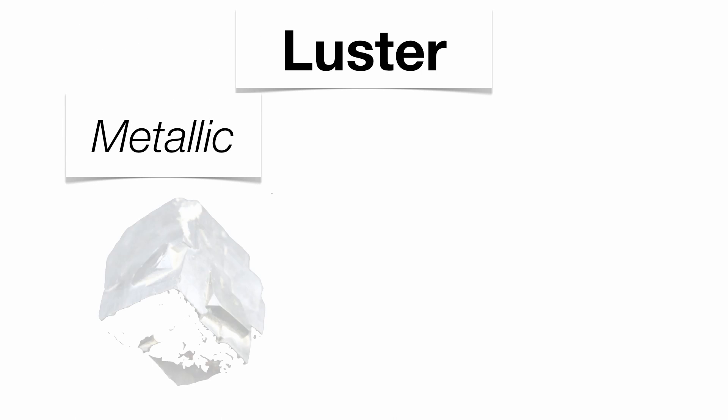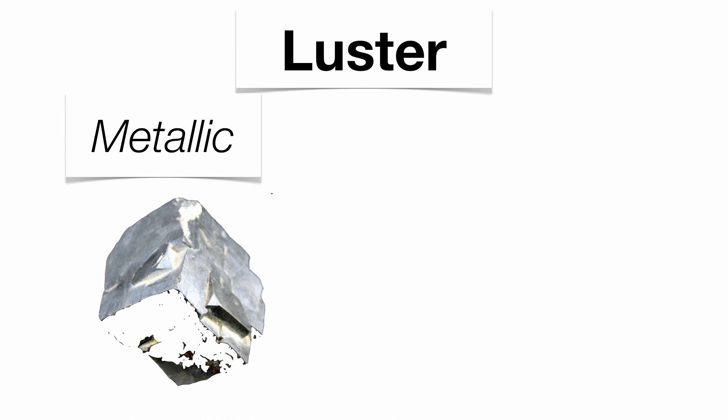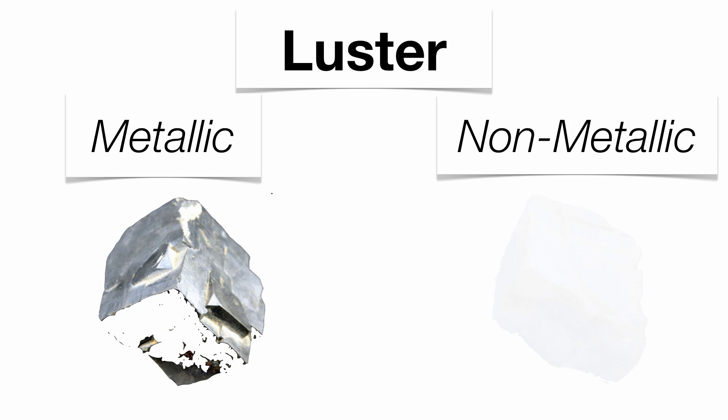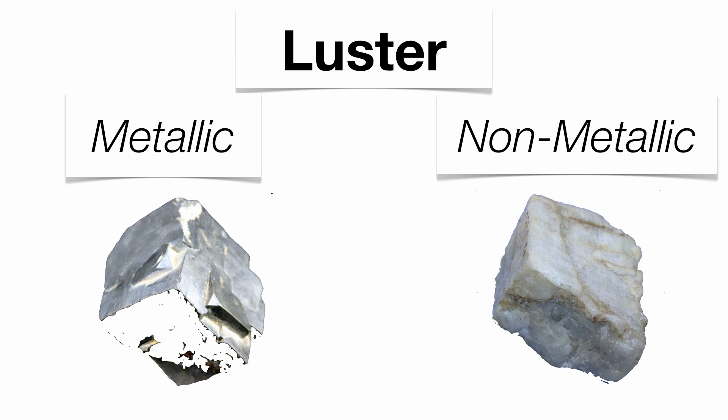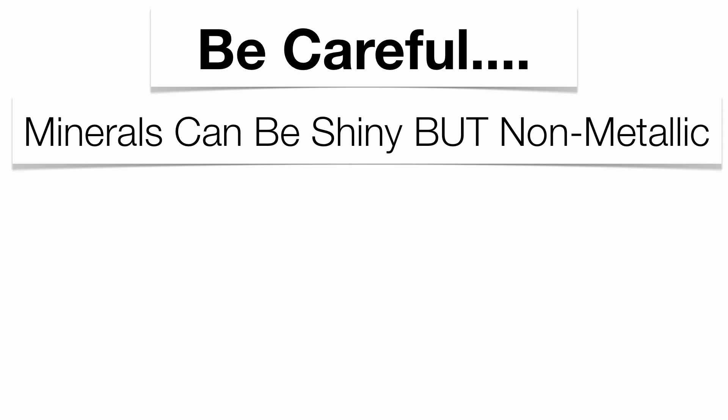Here's the mineral galena, which has a metallic luster and looks like a piece of metal. And here is feldspar, which does not look like a piece of metal — a non-metallic mineral. It's very important to identify the difference between the two. Be careful, because many times students will describe a metallic luster as simply being shiny.